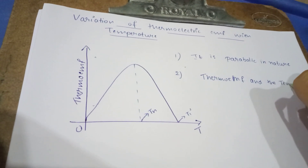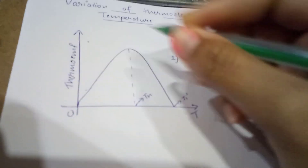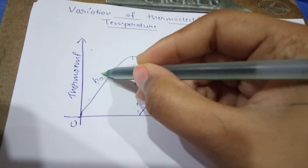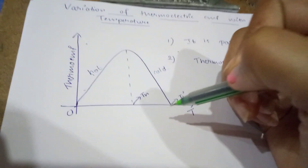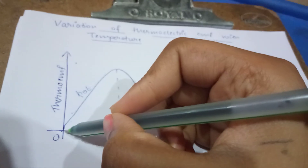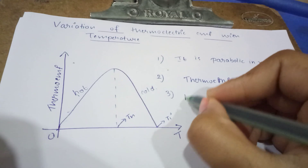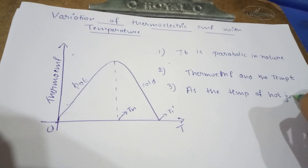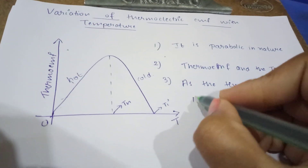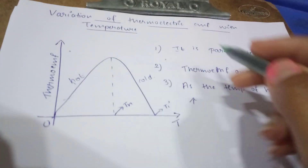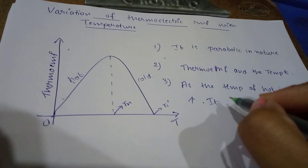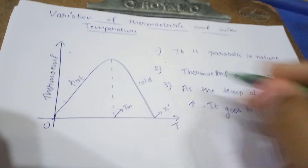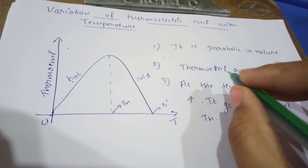This graph shows the variation of the hot junction versus the cold junction. As the temperature of the hot junction increases, the thermo EMF goes to a maximum level T-N.